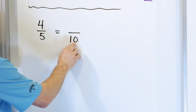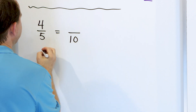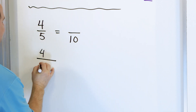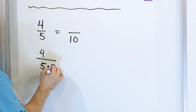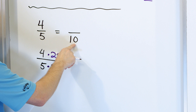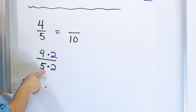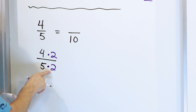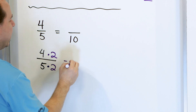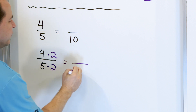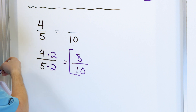Notice the new denominator is 10. So what I'm really going to do is take this 4/5 and multiply by 2 on the top and 2 on the bottom. Why? Because this denominator is 10 — I'm trying to find an equivalent fraction with a 10 in the bottom, so I must multiply by 2 to get 10. And then I have to multiply the top as well. So the bottom is 5 times 2 is 10, and the top is 4 times 2 is 8. So the answer is 8/10.